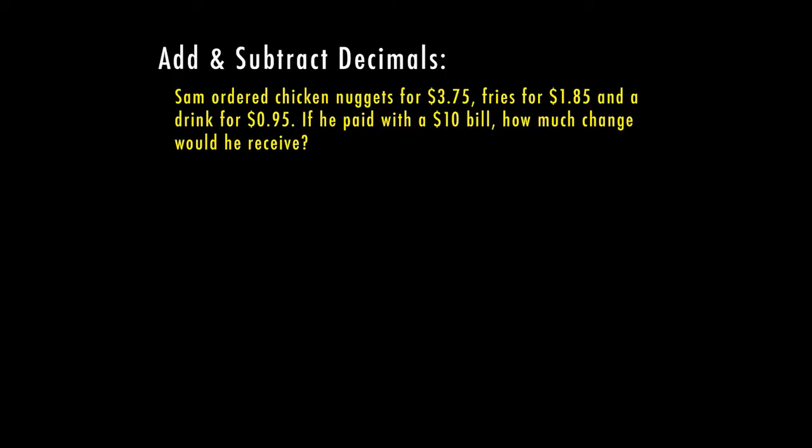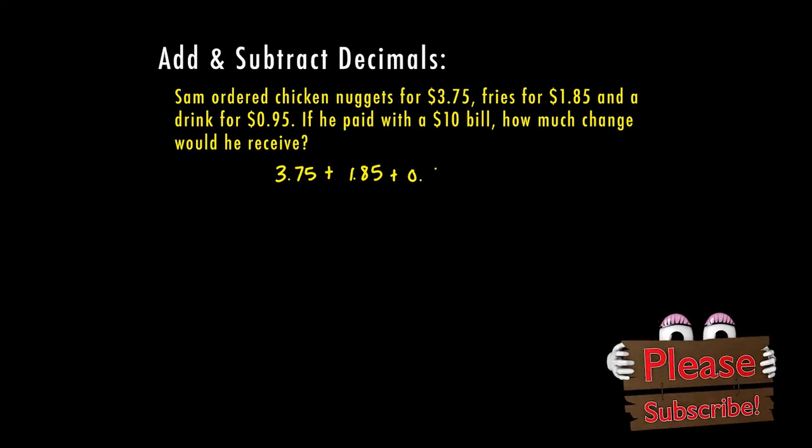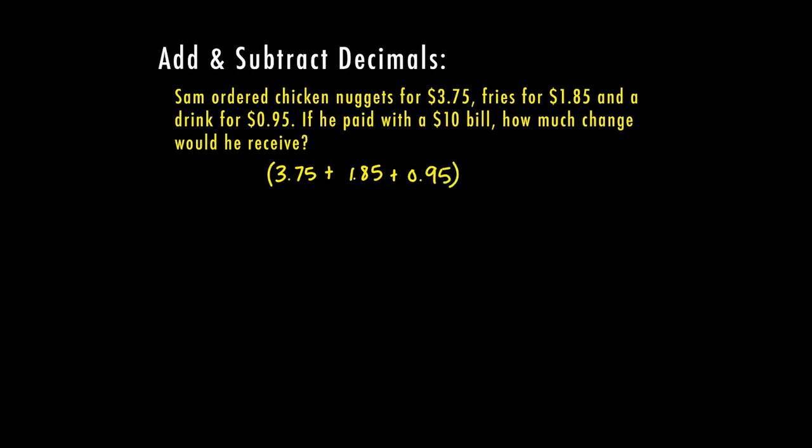Here we have Sam ordered chicken nuggets for $3.75, fries for $1.85 and a drink for 95 cents. If he paid with a $10 bill, how much change would he receive? So let's set up the problem first. We need to add up all of our prices here. So $3.75 plus $1.85 plus 95 cents. And once I add all those together, I'm going to subtract that answer from $10 to find out how much change Sam is going to get back. So in order to add the numbers that are in the parentheses, I'm going to line up my decimals and add everything together and bring down my decimal.